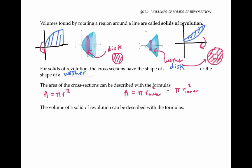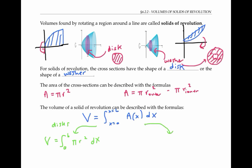The volume of any solid that can be sliced into cross sections using planes perpendicular to the x-axis is given by V equals the integral from x equals a to x equals b of the area of the cross section at point x, integrated dx. If our cross sections are disks, this formula becomes the integral of pi r squared dx, where the radius r is a function of x. If instead the cross sections look like washers, the volume formula becomes the integral of pi r-outer squared minus pi r-inner squared dx, where r-outer and r-inner are functions of x.